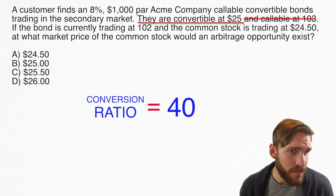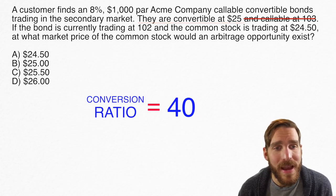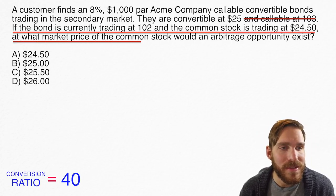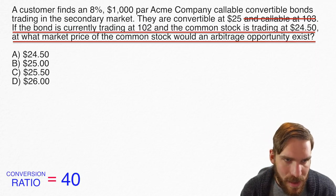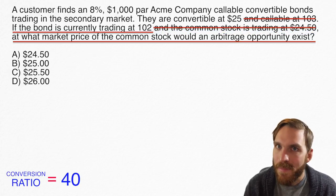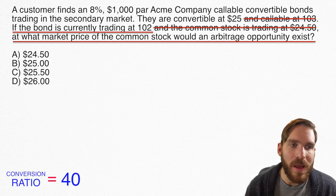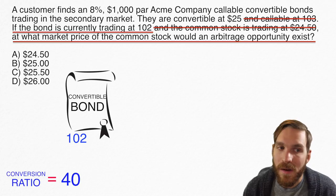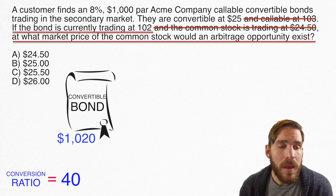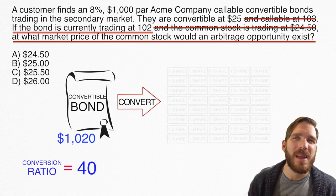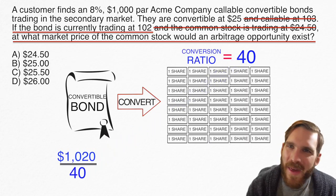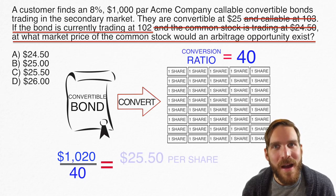That doesn't solve the question yet. The last sentence says: if the bond is currently trading at $102 and common stock is trading at $24.50, at what market price of the common stock would an arbitrage opportunity exist? The $24.50 is not important — another piece of useless information. The bond trading at $102, meaning $1,020 in dollar terms, is very important. If I buy it for $1,020 and convert into 40 shares, it's like I'm paying $25.50 per share ($1,020 divided by 40).